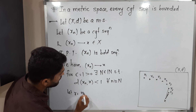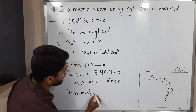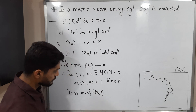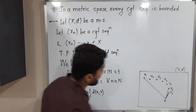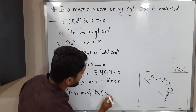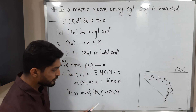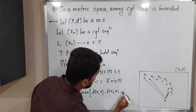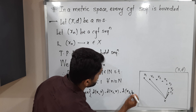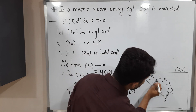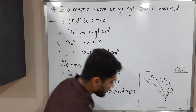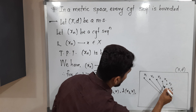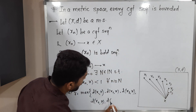So I choose R equal to the maximum of d(x1, x), d(x2, x), d(x3, x), d(x4, x), and continuing in this way up to d(x_{N-1}, x).